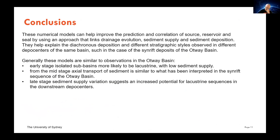In conclusion, the numerical models are able to show this prediction between the stratigraphy and how that relates to source, reservoir, and seal using this approach. In the Otway Basin, the results are starting to show similarities to what we actually observe: the early stage isolated sub-basins are more likely to be lacustrine with a low sediment supply; the mid-stage axial transport of sediment is something observed in well logs and interpreted in the SynRift sequence in the Otway; and the late stage supply variations suggest increased potential for lacustrine sequences, particularly in those downstream depot centres.